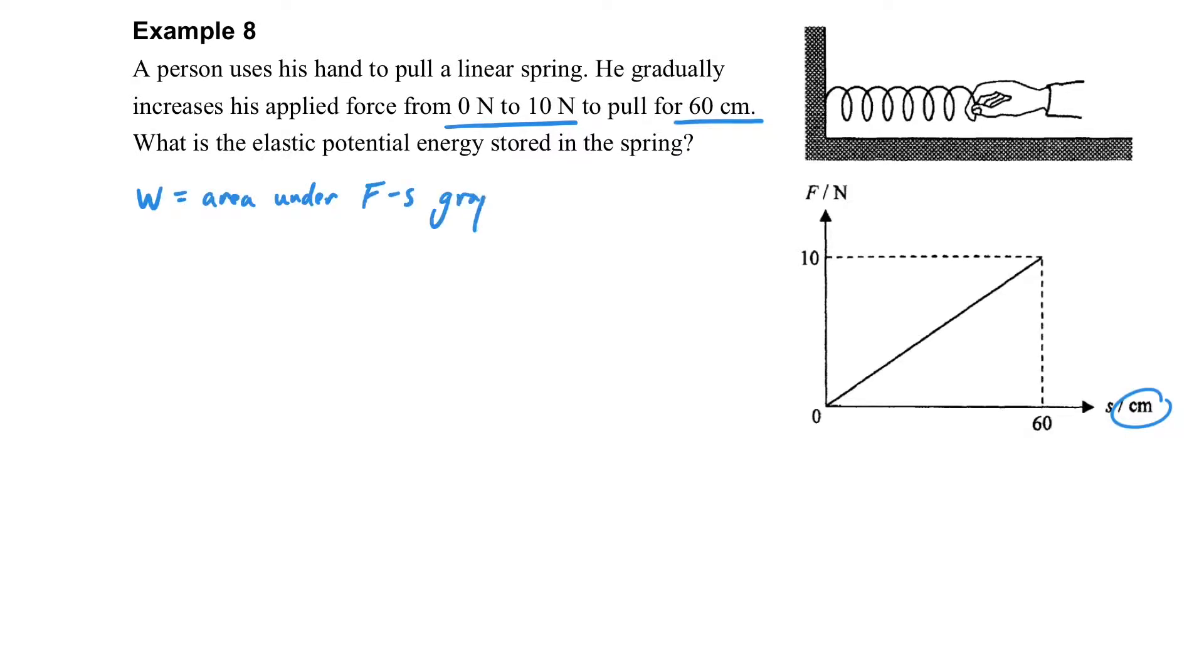Using the work done equals the area under the F-s graph, we can calculate it. The only trick here is that the displacement value is in centimeters, so we have to convert it to meters to match our equation. The Elastic Potential Energy equals the work done, which equals 3 joules.